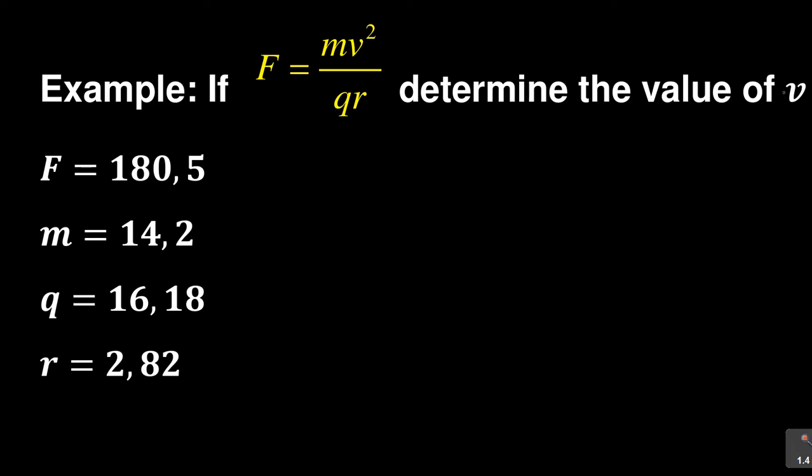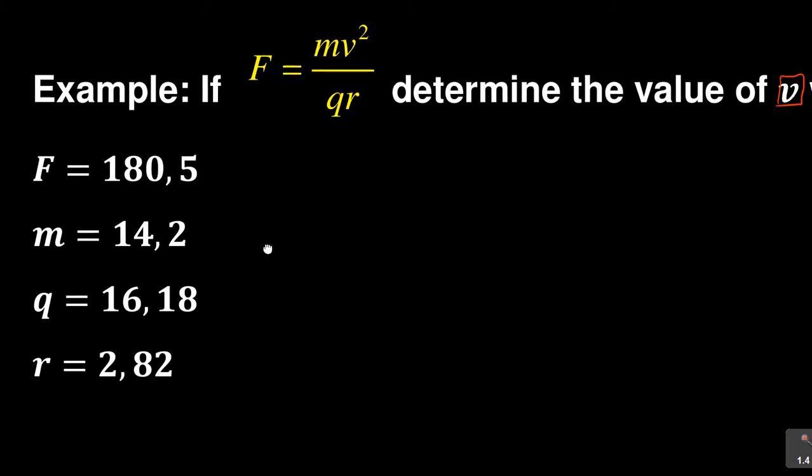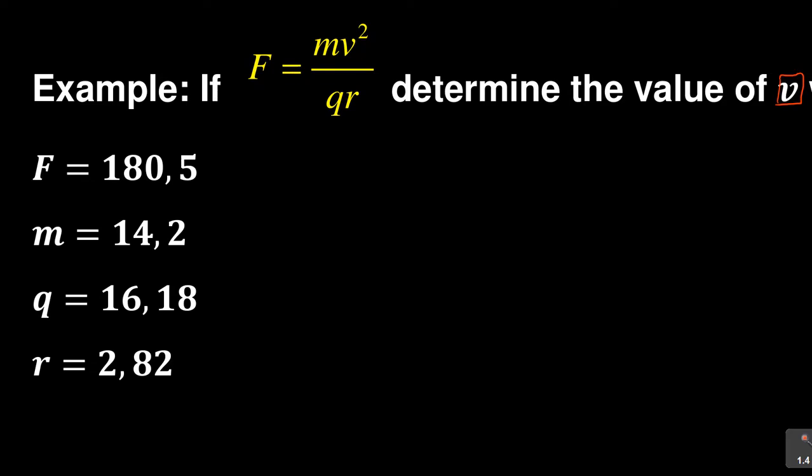For me to find v, I first have to make it the subject of the formula. That's the first part - let me put this into brackets because this is the last part of the equation. But the first part, which is number one, I must make v the subject of the formula. So that's the first part - I must make v the subject first.